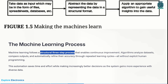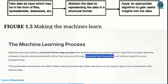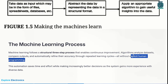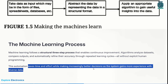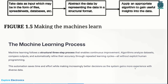Machines learn through this structured three-step approach. First, they analyze the data set by comparing outputs and experiences from previous results, and automatically refine their accuracy through repetitive learning cycles without explicit human programming. This machine learning process automates everything, saves human time and effort, and makes increasingly better decisions as the system gains more experience with diverse data.